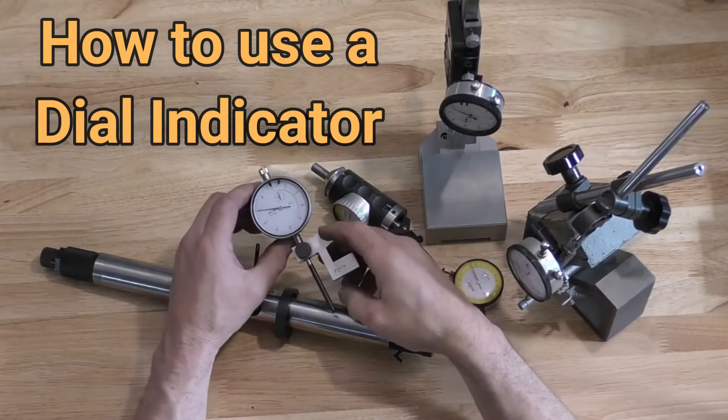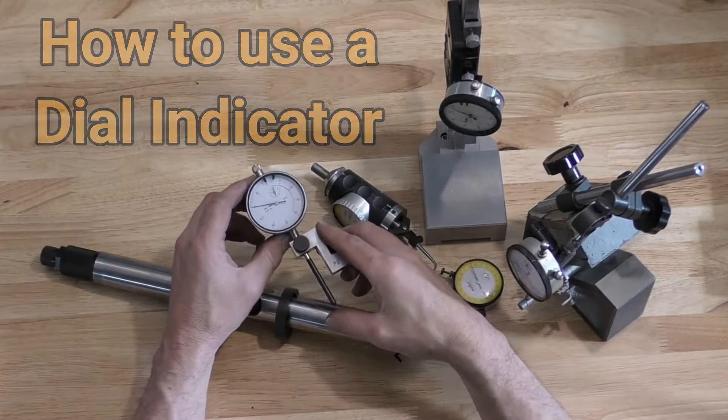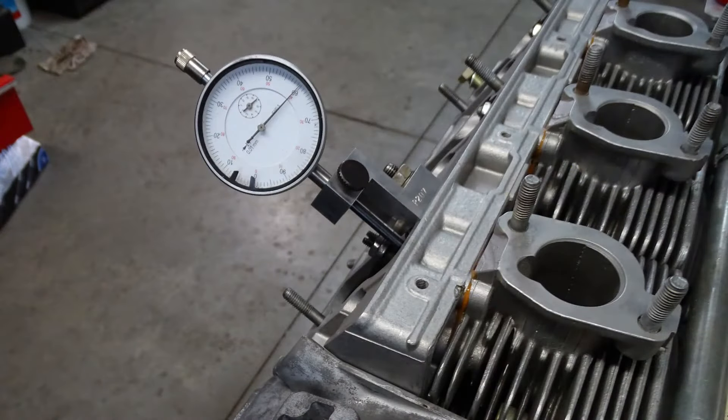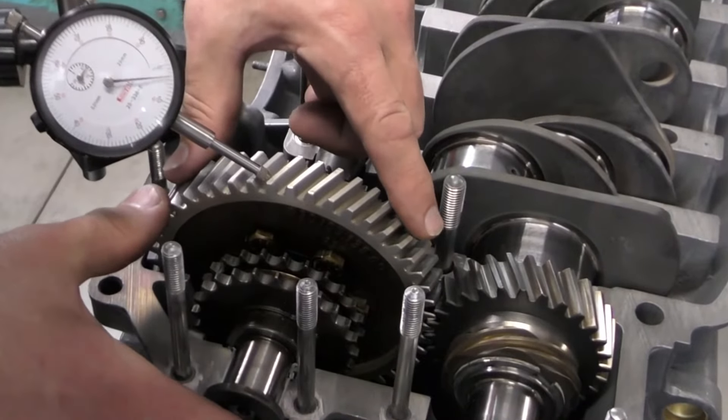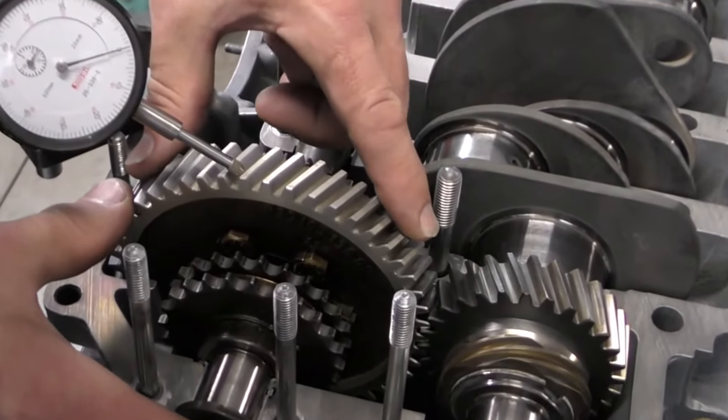Dial gauges are a tool that we use for measuring travel. The way a dial gauge works is you apply the pointer against whatever it is you want to move, and as it pushes against the dial gauge the needles will move.